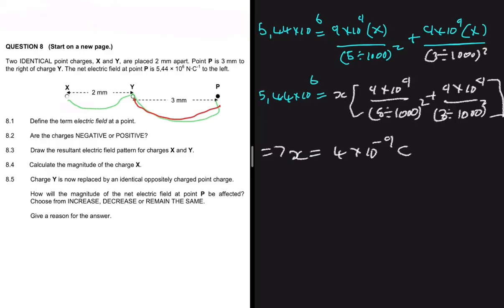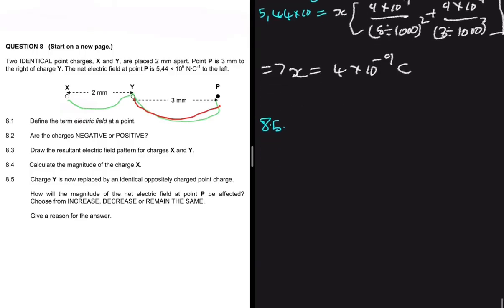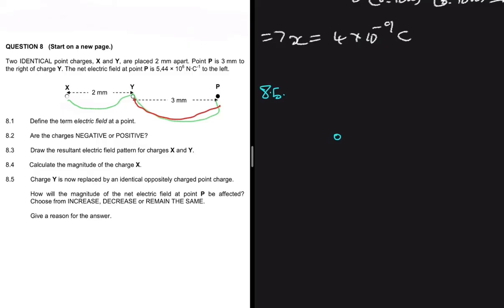Moving to question 8.5: charge Y is now replaced by an identical but positively charged point charge. The question asks how the magnitude of the net electric field at point P will be affected — will it increase, decrease, or remain the same? Originally, both the electric field due to Y and the electric field due to X were pulling point P to the left.